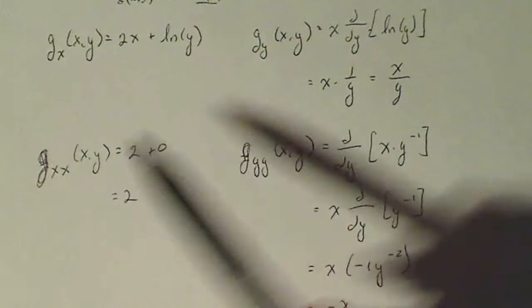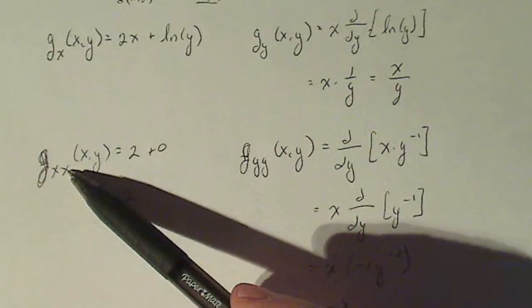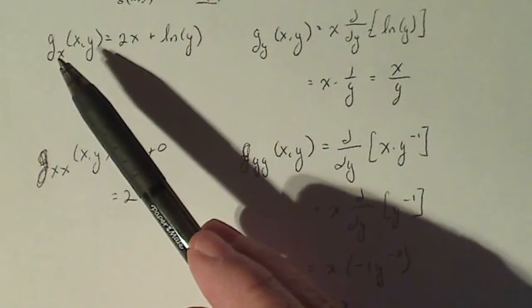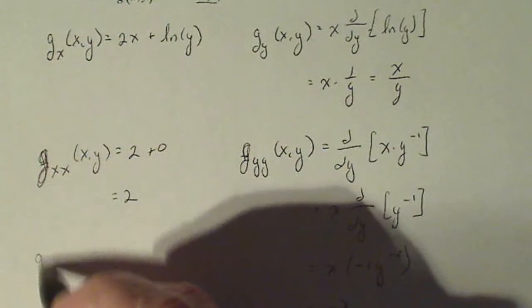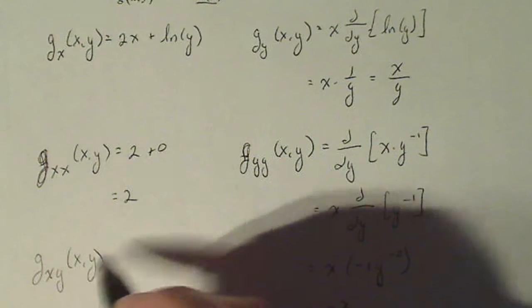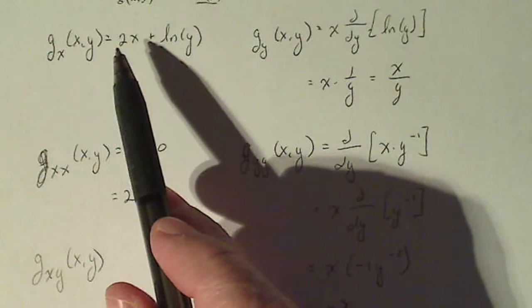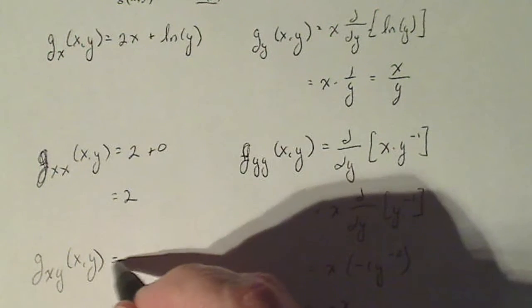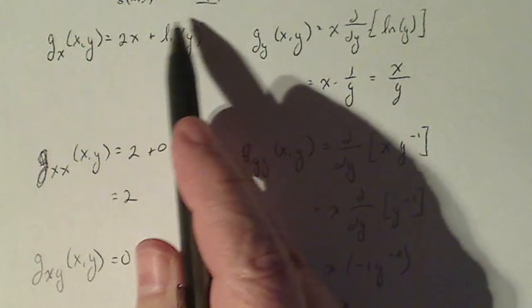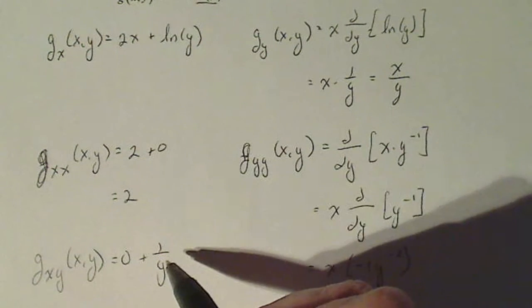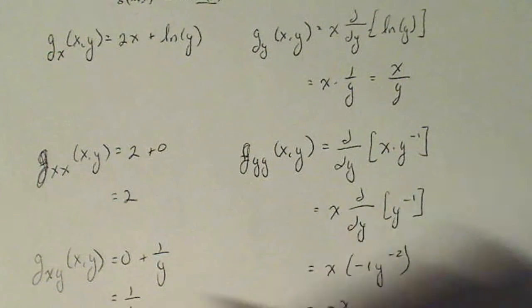Now I'm going to do g sub xy — taking g sub x and finding the derivative with respect to y. Looking at g sub x, there are no y's in the first term, so the derivative of that with respect to y is 0. Then I take the derivative of the second term with respect to y, which is 1 over y. So g sub xy equals 1 over y.